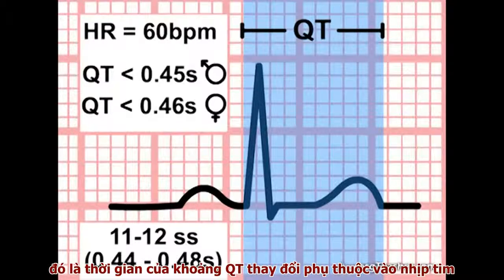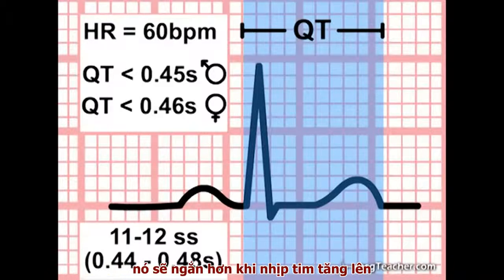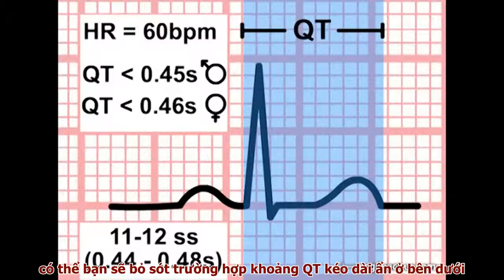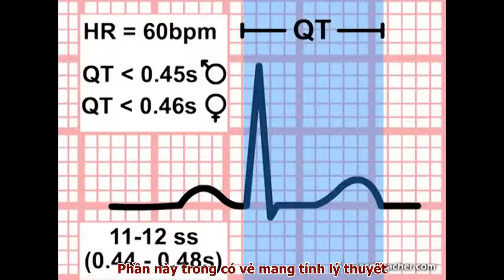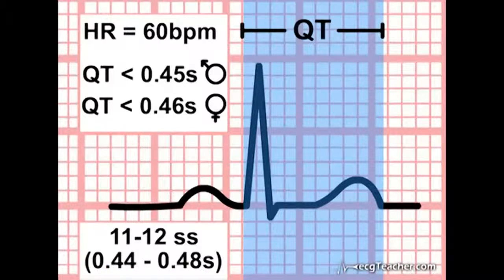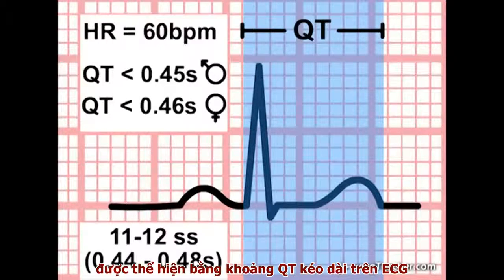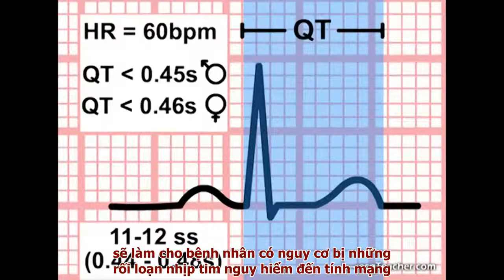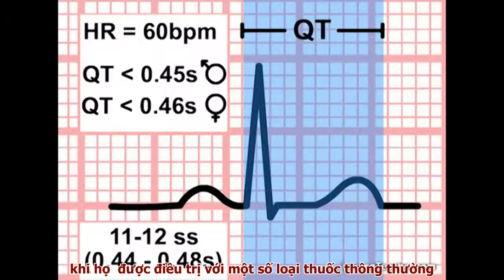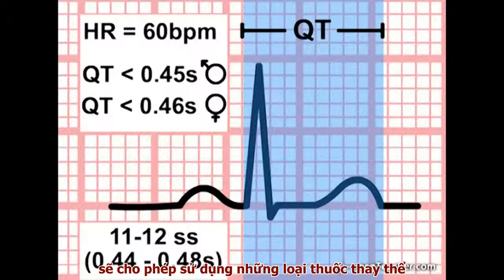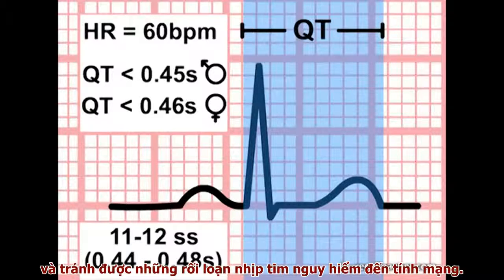It is important to realise that the measured QT interval varies with heart rate, becoming shorter as the heart speeds up or longer when the heart slows down. Therefore, particularly at higher heart rates, it is possible to miss an underlying prolonged QT interval. Abnormally slow ventricular repolarization, evidenced by a prolonged QT interval on the ECG, places patients at risk of fatal arrhythmias when treated with certain commonly used drugs. The ability to identify prolonged QT in these patients can lead to the use of alternative medications and avoidance of sometimes fatal arrhythmias.